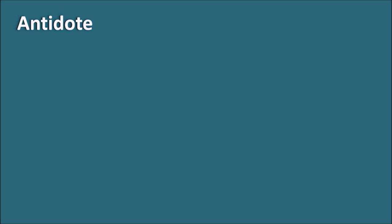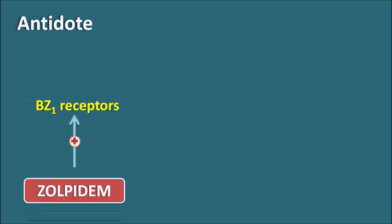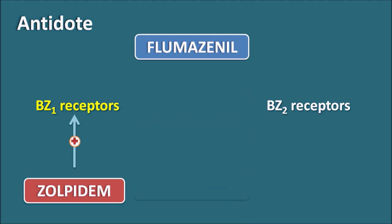The antidote for Zolpidem is important because Zolpidem can produce severe CNS side effects like hallucinations and anxiety, and if accidentally administered, these effects must be immediately antagonized. Zolpidem acts on benzodiazepine-1 receptors with no action on benzodiazepine-2 receptors. We have the drug flumazenil, which can block both benzodiazepine-1 and benzodiazepine-2 receptors. Flumazenil can therefore be used as the antidote for Zolpidem, just as it is the antidote for benzodiazepines.